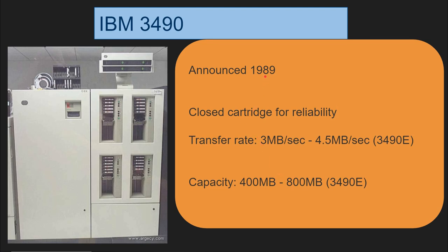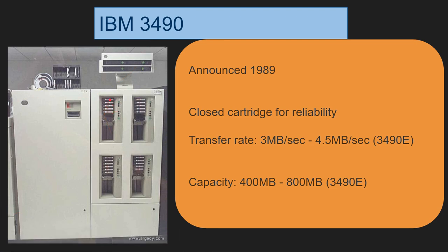In 1989 IBM did it again and made everything better. It announced the 3490 tape drive. You can see here the stacker where you could stack several tape cartridges, and a display that tells you what it's doing and which tape it's looking at. Transfer rate went from 3 megabytes to 4.5 megabytes per second as the capacity went up. As you improve capacity on those cartridges you also need to improve the transfer rate, or you'd just linearly wait more and more time.